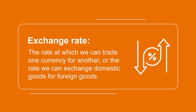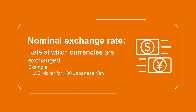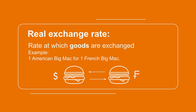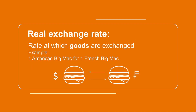Let's start with the definition. Exchange rate is the rate at which we can trade one currency for another, or the rate we can exchange domestic goods for foreign goods. When we exchange currencies, say 1 US dollar for 100 Japanese yen, this 1 to 100 ratio is a nominal exchange rate. When we exchange goods, say 1 American Big Mac for 1 French Big Mac, this 1 to 1 ratio is a real exchange rate.